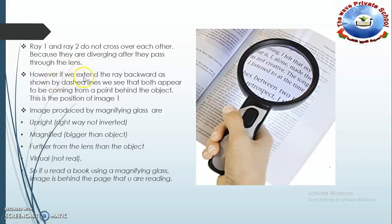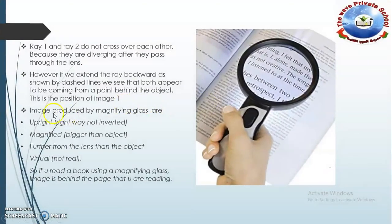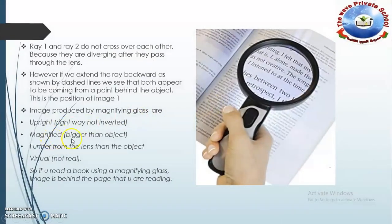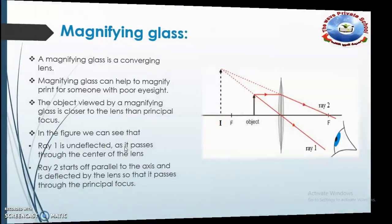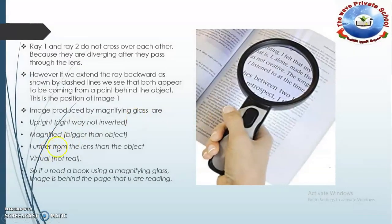However, if we extend the rays backward, as shown by dashed lines, we see that both appear to be coming from a point behind the object. This is the image position. The image produced by a magnifying glass is upright — the right way up, not inverted as we saw in the last example. The image is magnified, bigger than the object, and further from the lens than the object.